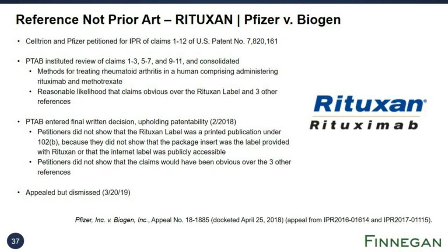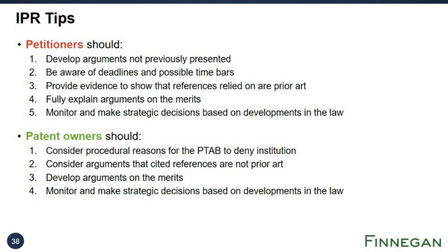Here are some IPR tips. Petitioners should: one, develop arguments not previously presented; two, be aware of deadlines and possible time bars; three, provide evidence to show that references relied on are prior art; four, fully explain arguments on the merits; and five, monitor and make strategic decisions based on developments in the law. Patent owners should: one, consider procedural reasons for the board to deny institution; two, consider arguments that cited references are not in fact prior art; three, develop arguments on the merits; and four, monitor and make strategic decisions based on developments in the law. As we saw with BIPCA litigation, there are multiple IPRs for biologic patents and appeals of those IPRs currently pending. With that, I will turn it over to Mark.